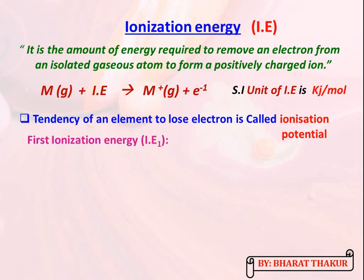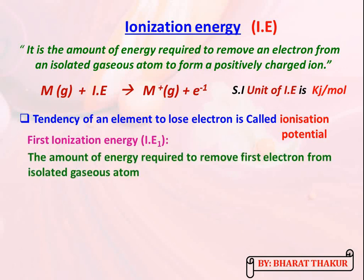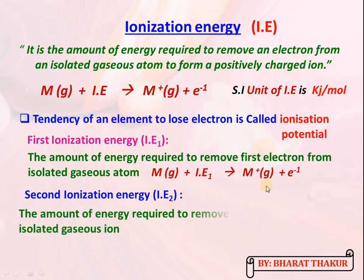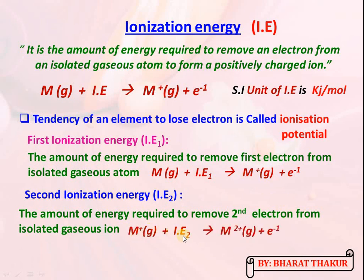First ionization energy is the energy required to remove the first electron from an isolated gaseous atom. The equation is: M (gaseous) + first ionization energy → M⁺ (gaseous) + electron. Second ionization energy is the amount of energy required to remove the second electron from the ion, forming M²⁺.